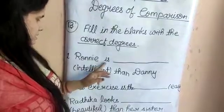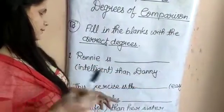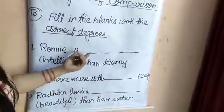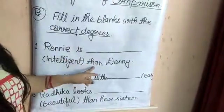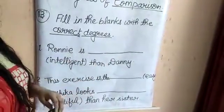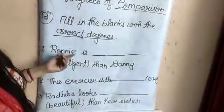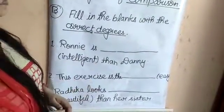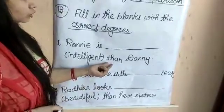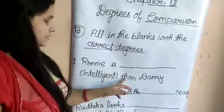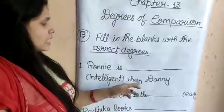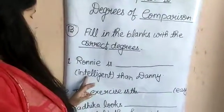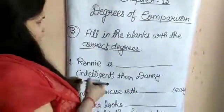First है: Roni is ___ than Danny। यहाँ adjective 'intelligent' दिया गया है, इसको sentence के according सही degree में fill करना है। यहाँ 'than' का use हुआ है, इसका मतलब यह comparative sentence है। Comparative sentence के according 'intelligent' का comparative करना होगा — 'more intelligent'।